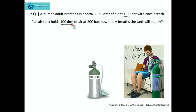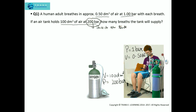If an air tank holds 100 decimeter cube of air at 200 bar, the volume of the tank's air is 100 decimeter cube. The 200 bar pressure is inside the tank, and as the air flows from the tank to this person, the pressure gets reduced to one bar. So this human is inhaling air at one bar, whereas inside the cylinder it is stored at 200 bar. We need to find how many breaths the tank will supply.